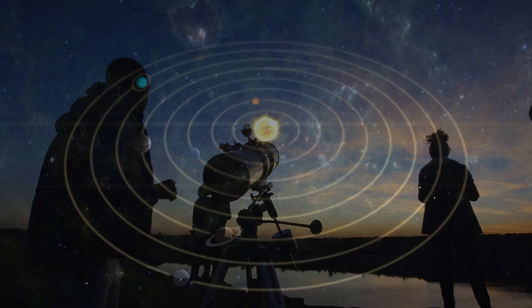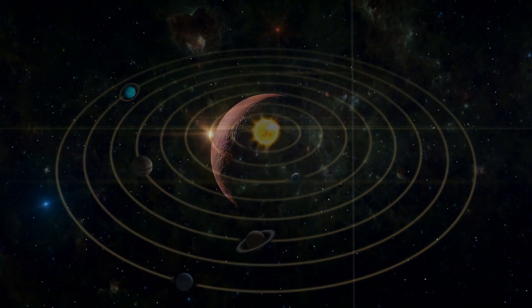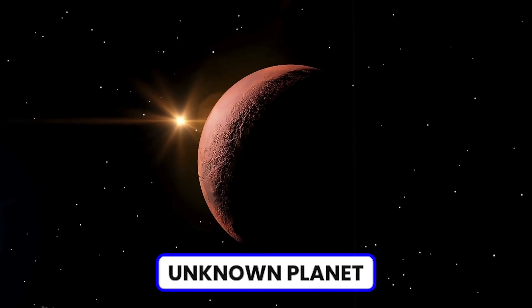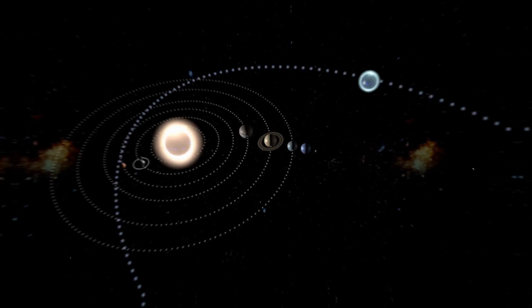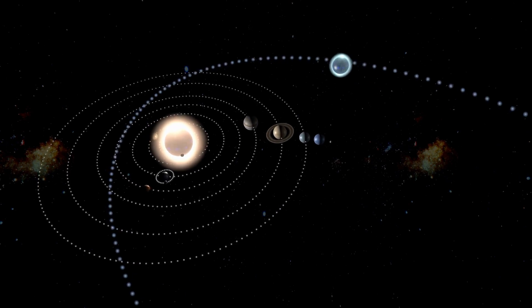Recent observations suggest that the farthest reaches of our solar system might be hiding a massive, unknown planet. Imagine a celestial body so large it could dwarf Earth and radically transform our understanding of the solar system.